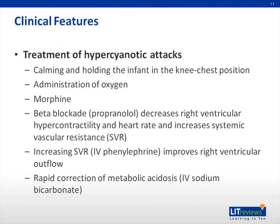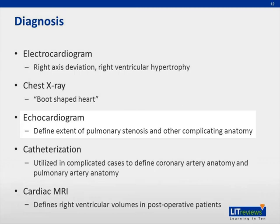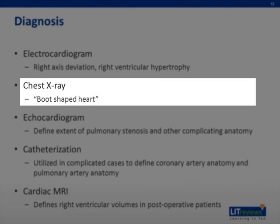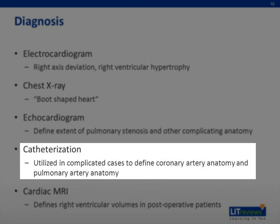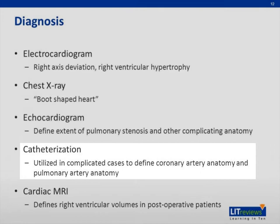Many different imaging modalities are used to diagnose Tetralogy of Fallot; however, the transthoracic echocardiogram is the gold standard mode of diagnosis. An electrocardiogram will show right axis deviation and right ventricular hypertrophy. The chest x-ray shows a boot-shaped heart due to the increase in size of the right side of the heart, causing the apex to move leftward and superiorly. The echocardiogram defines the extent of pulmonary stenosis and other associated anomalies. Cardiac catheterization is not typically used but is utilized in complicated cases to define coronary artery and pulmonary artery anatomy. Cardiac MRI is commonly used to define right ventricular volumes in post-operative patients.